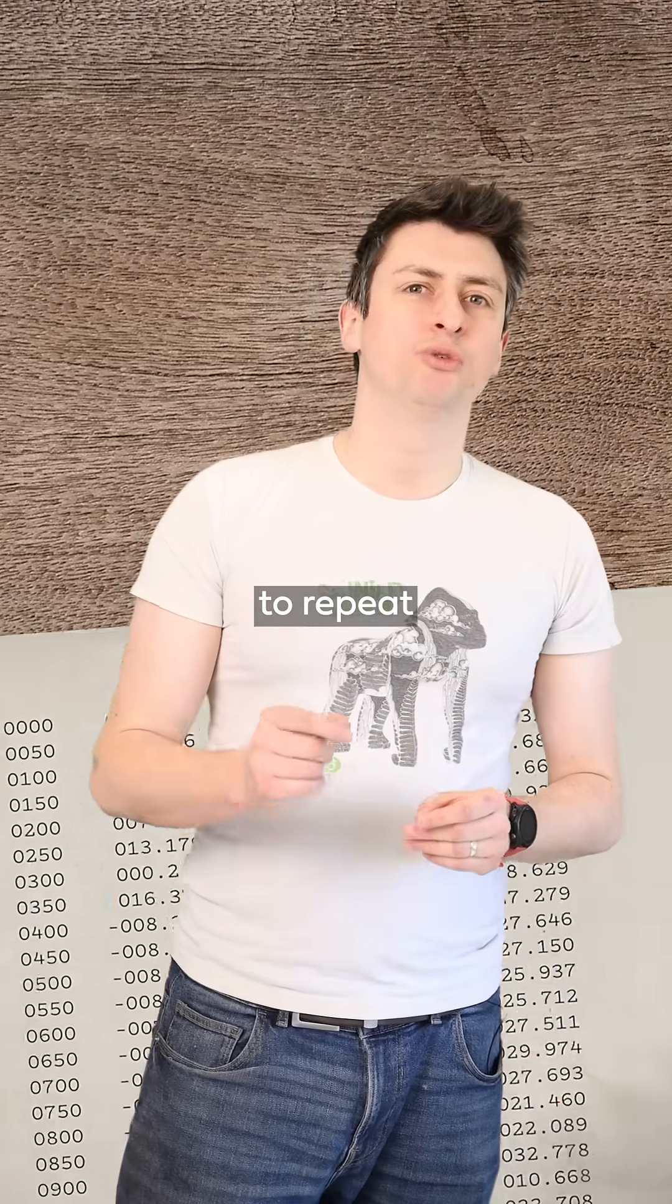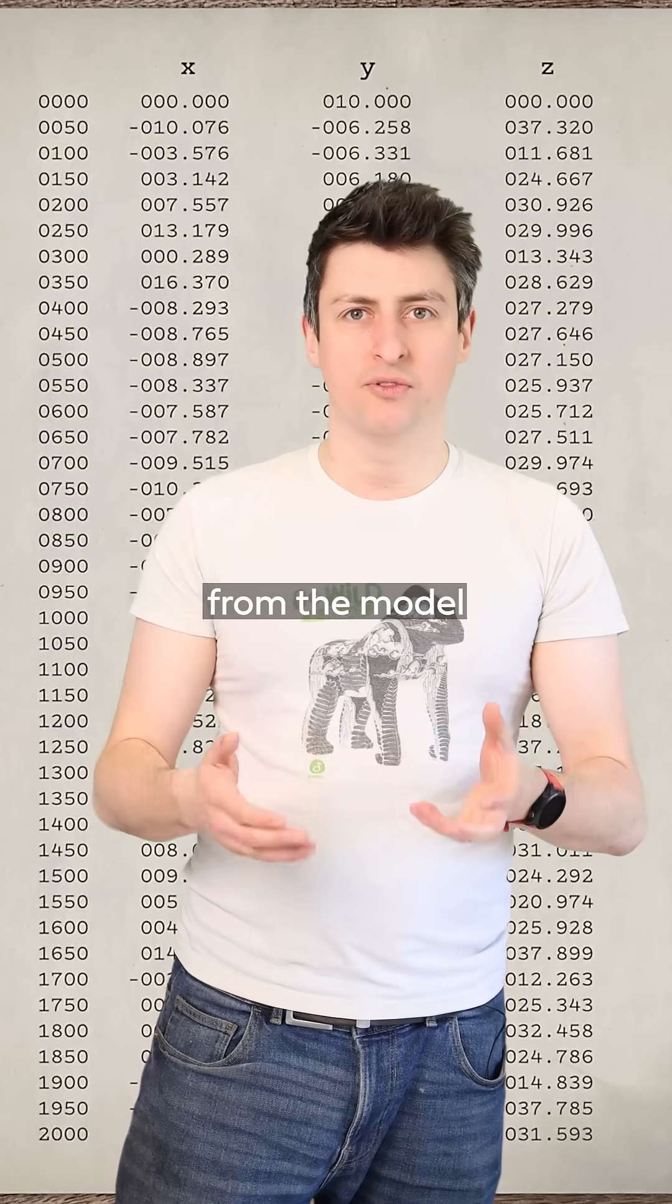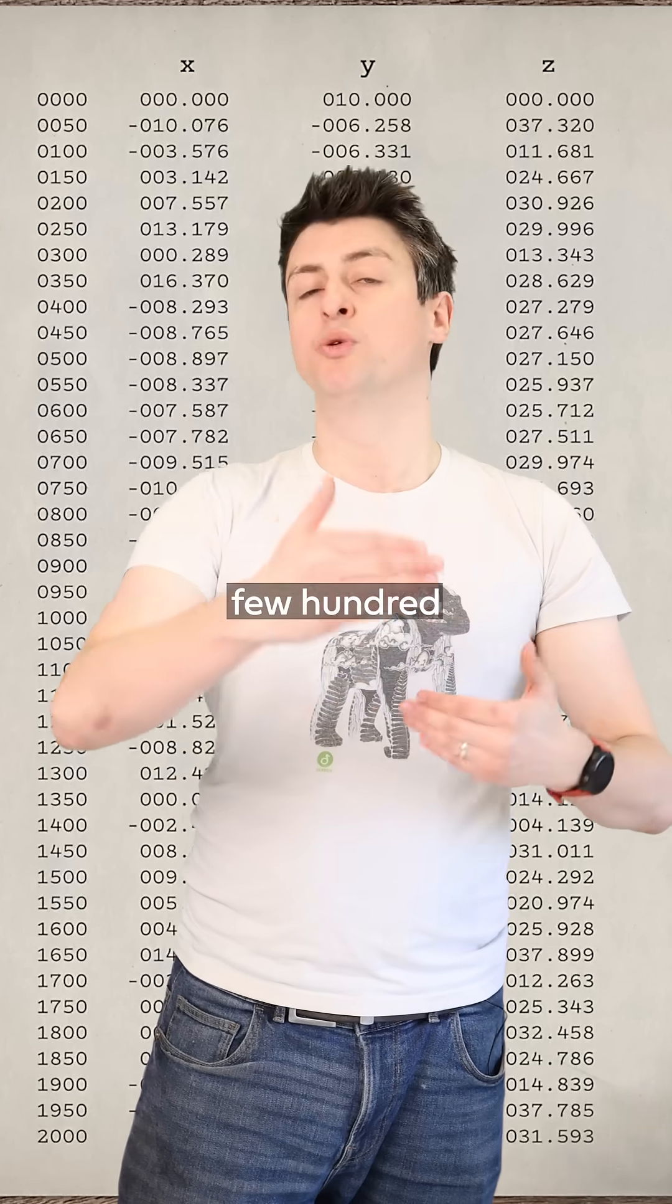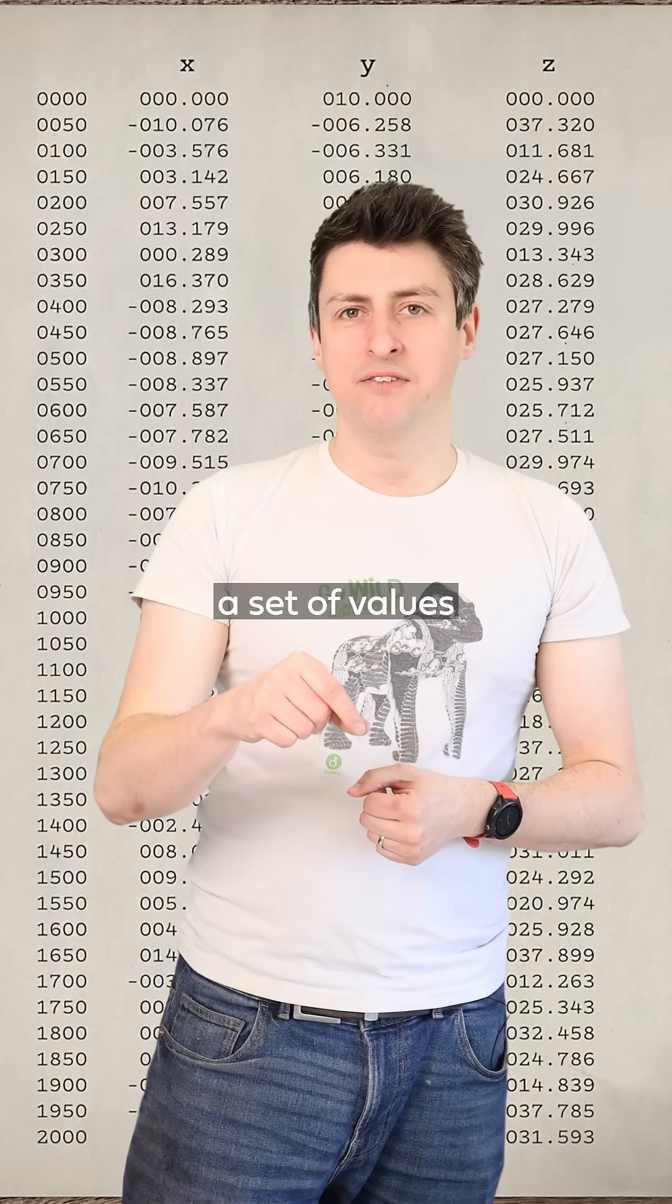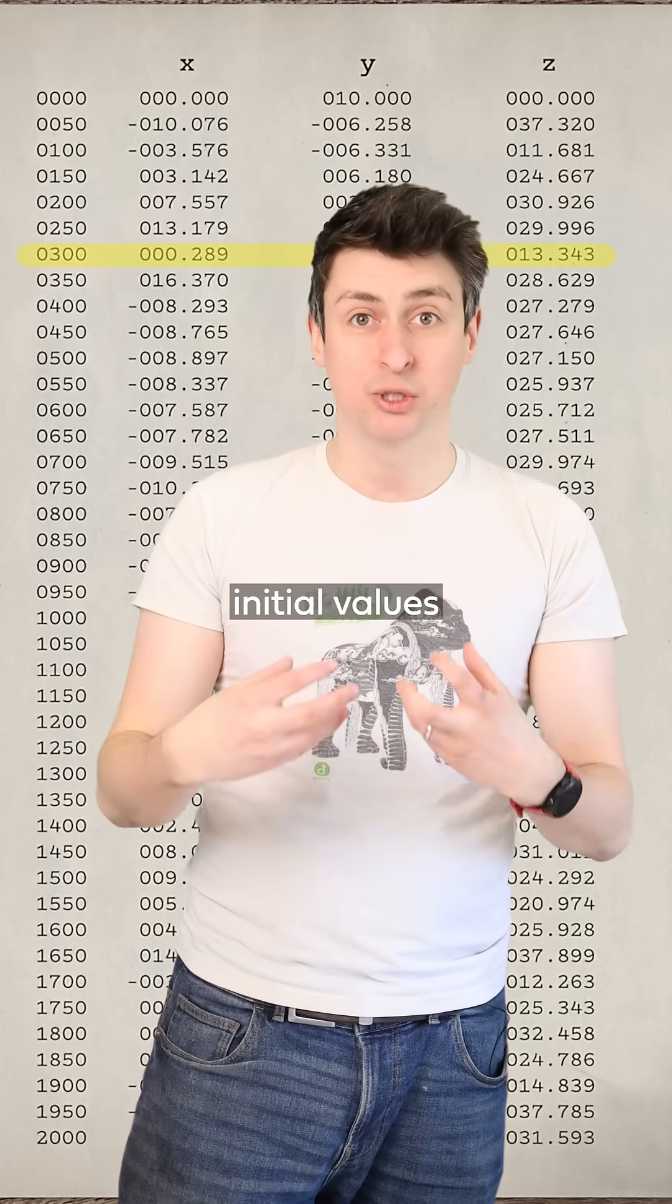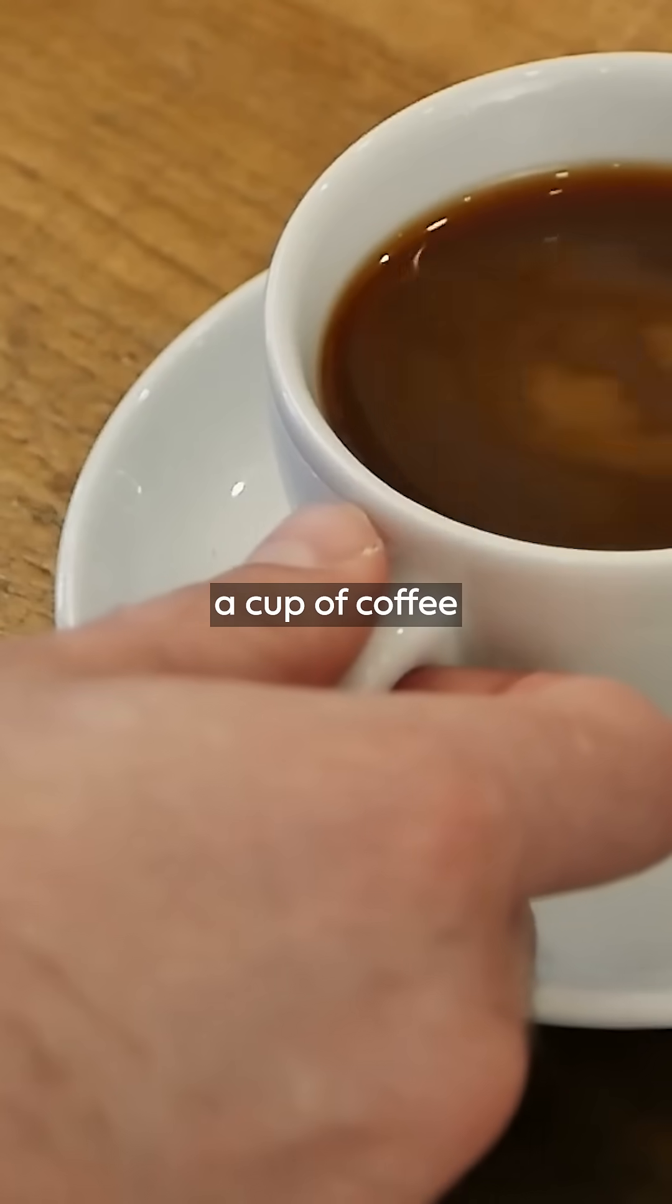During one experiment, Lorenz wanted to repeat a set of calculations, so he took the printout from the model that showed the past few hundred time steps of results and then selected a set of values from a little way back in the past as his new initial values, and then set the computer running. Knowing this would take a long time, he went to get a cup of coffee.